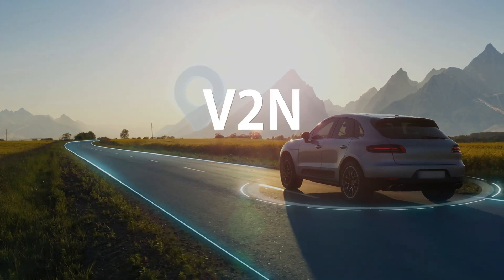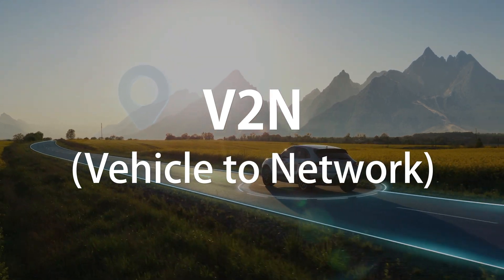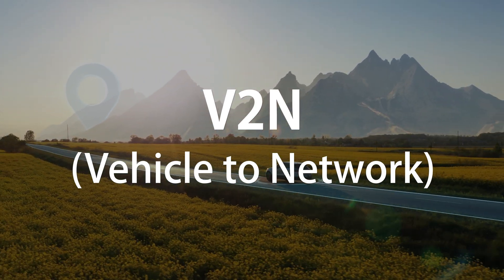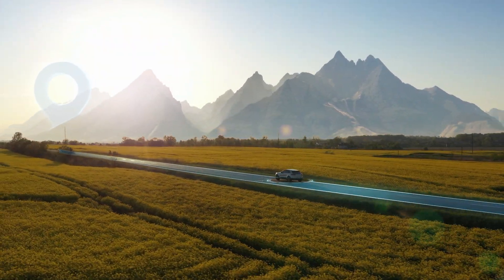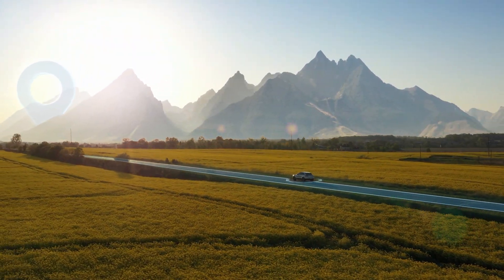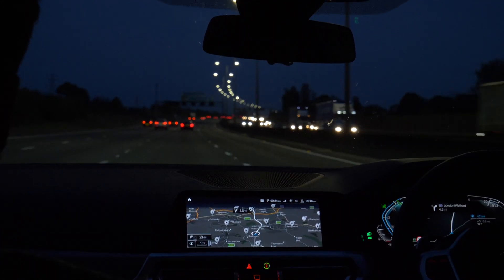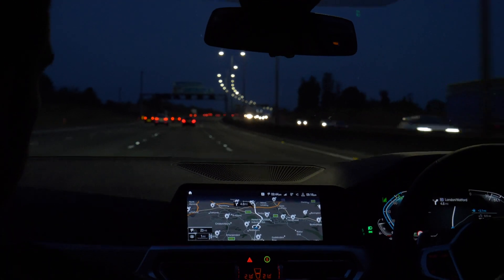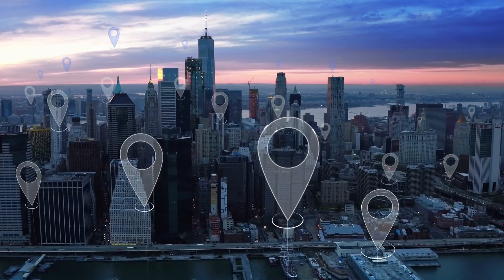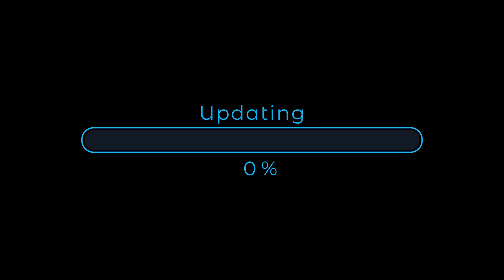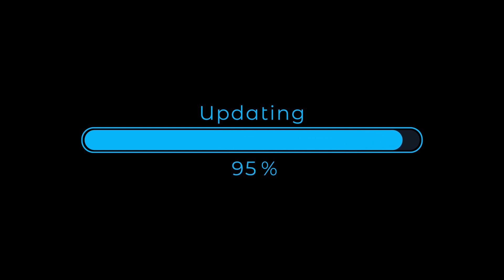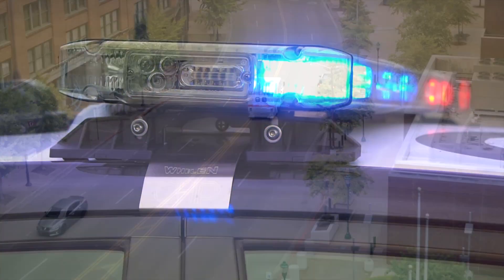The final example is V2N, or vehicle to network, in which communication passes between the vehicle and various application servers via a cellular network. This could be used to enhance navigation systems with real-time congestion notifications, triggering dynamic and city-wide route planning. Software updates and remote vehicle health monitoring could also take place across this type of connection, not to mention sending accident reports to the emergency services when a vehicle is involved in a crash.